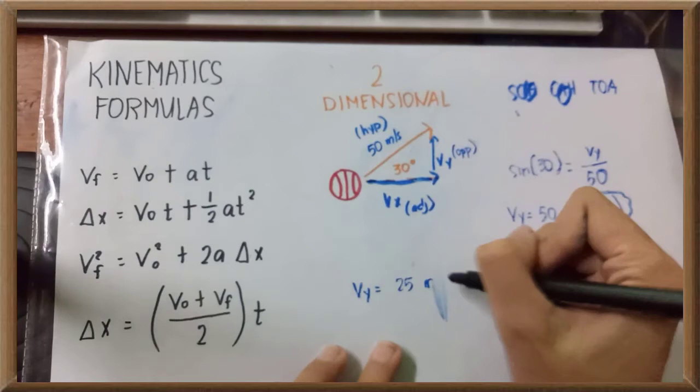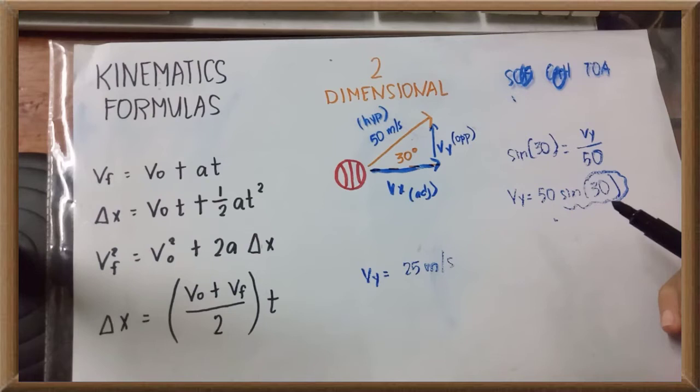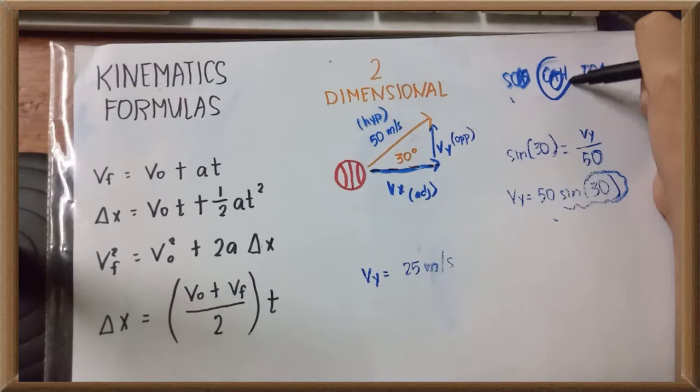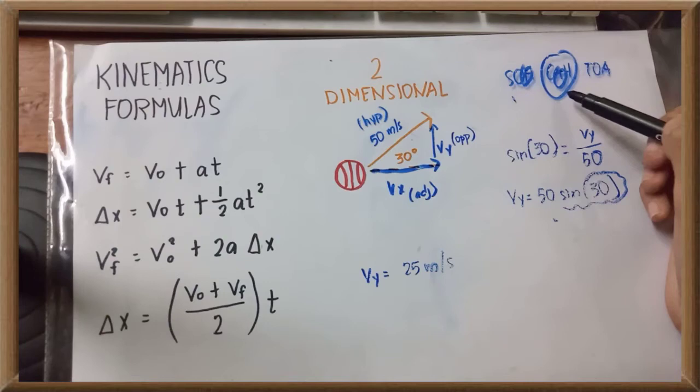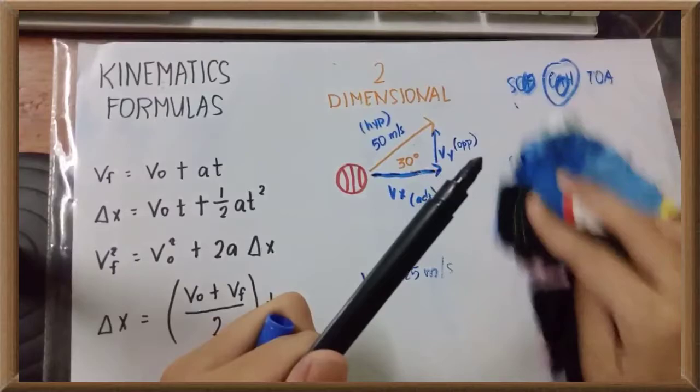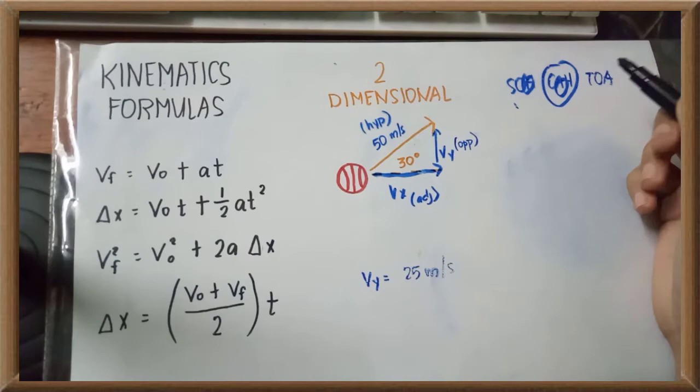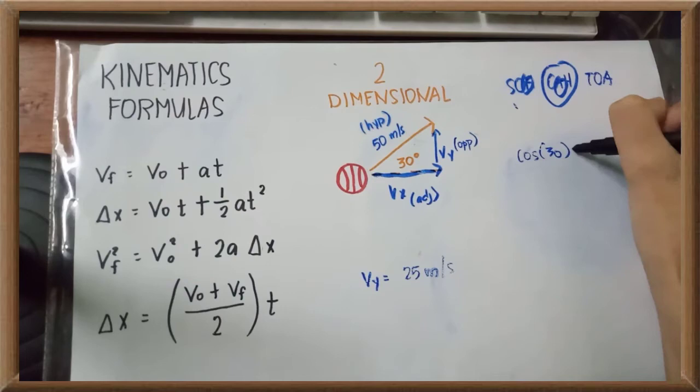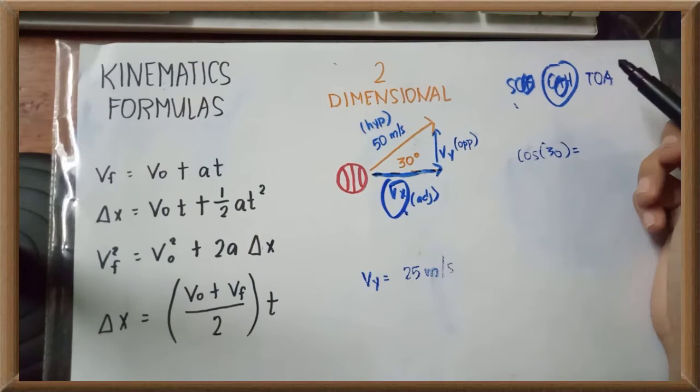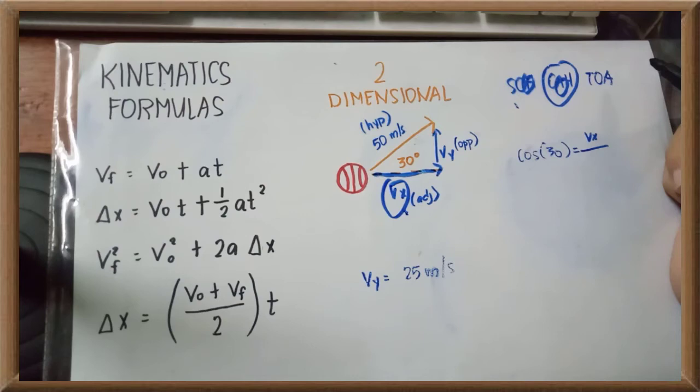And it is the same thing for our horizontal velocity. Balik tayo sa SOH CAH TOA. At sa pagkakataong ito, ang ating naman gagamitin ay cosine is equal to adjacent over the hypotenuse. At our cosine of 30 degrees is equal to adjacent side - it is horizontal velocity Vx over the hypotenuse and it is 50 meter per second.